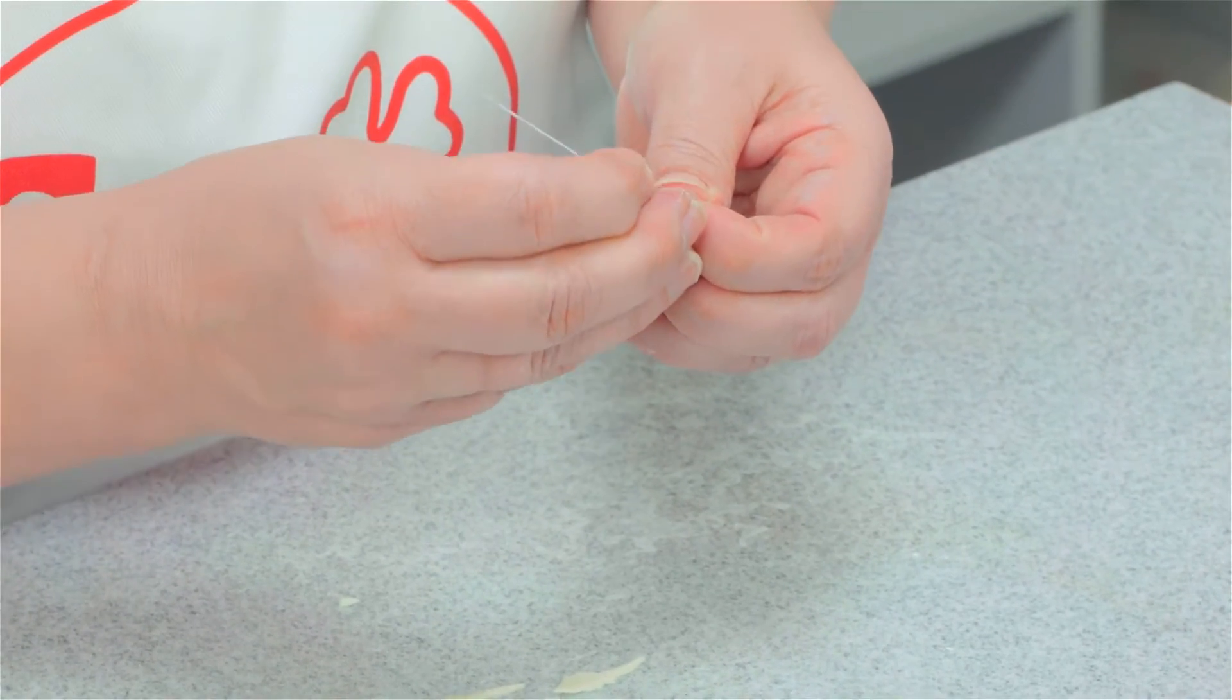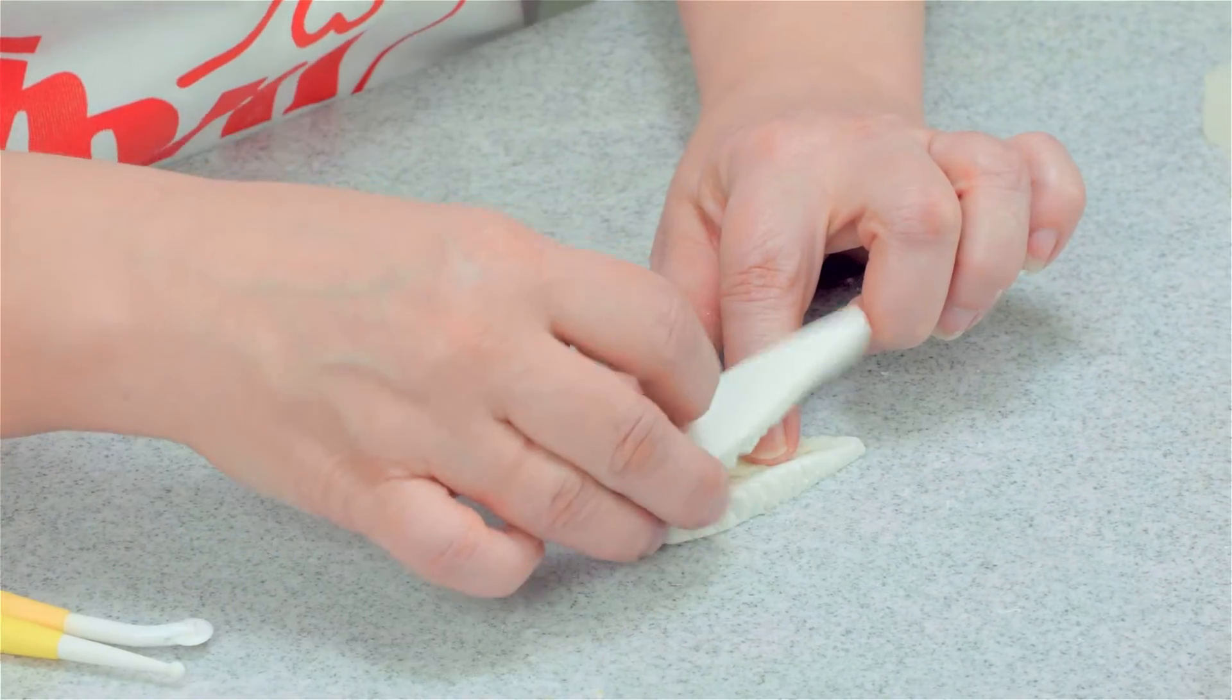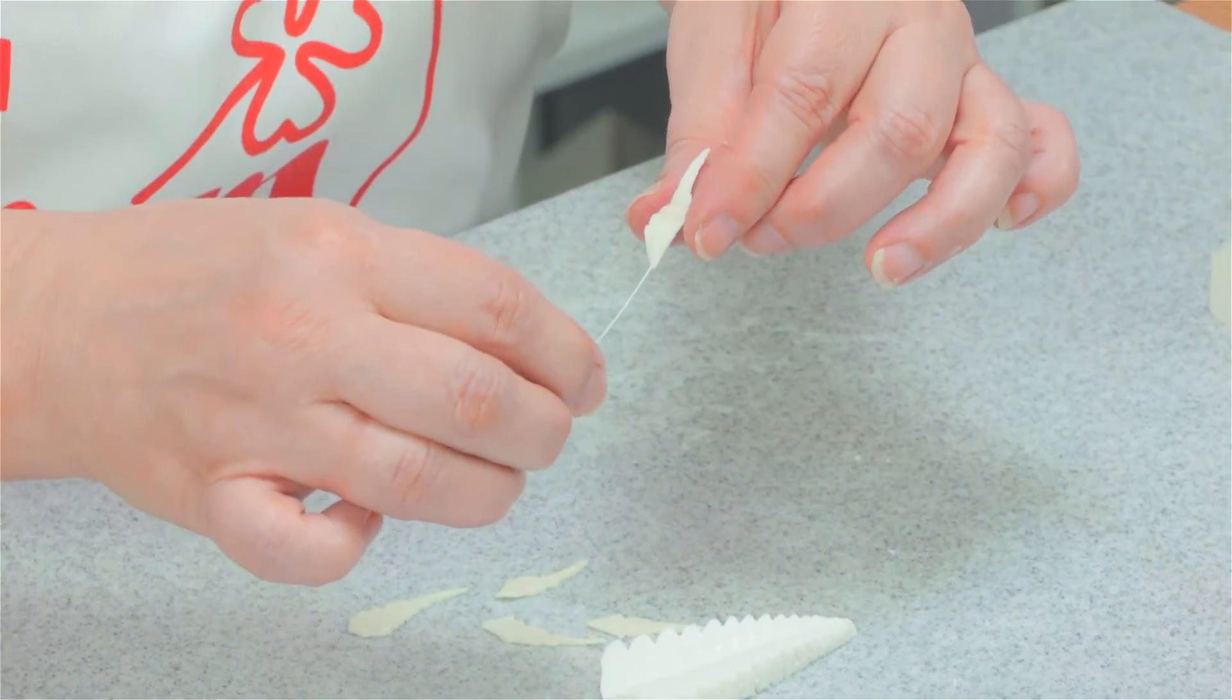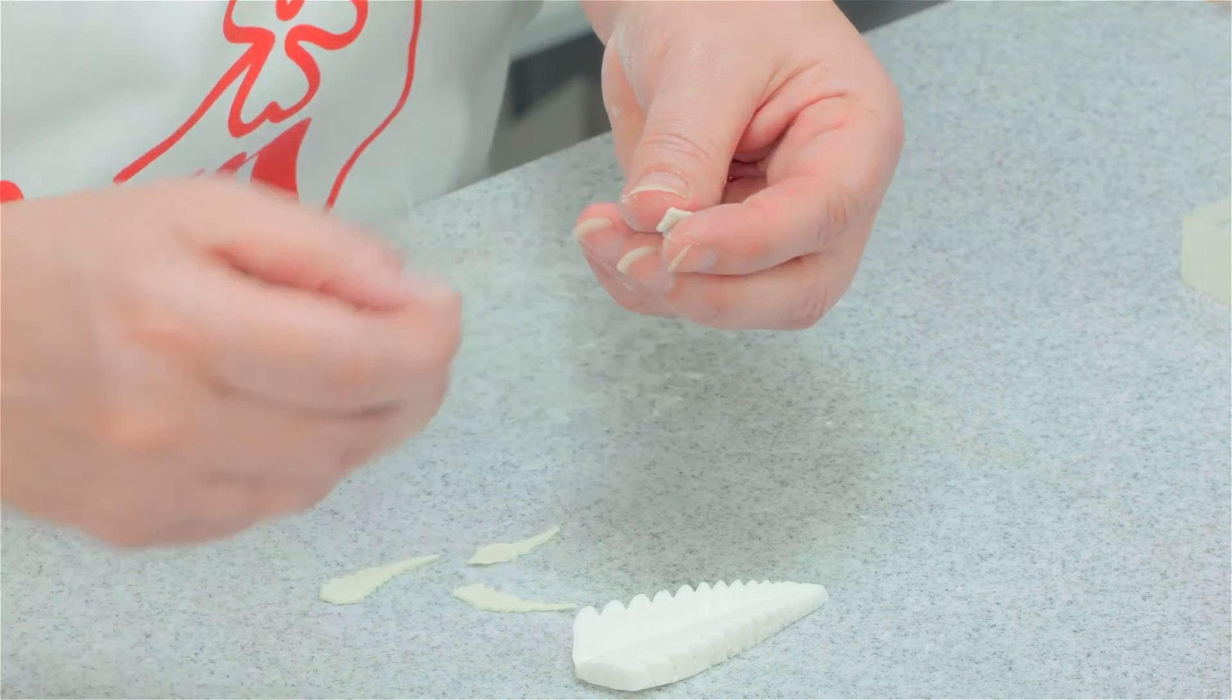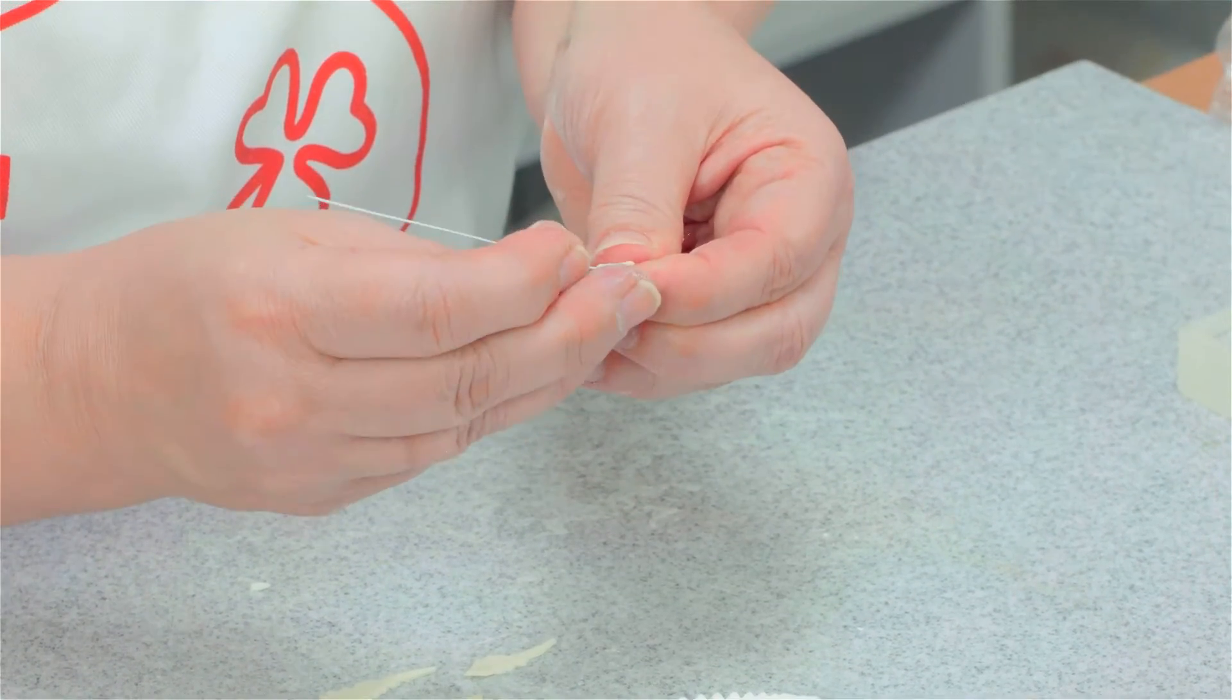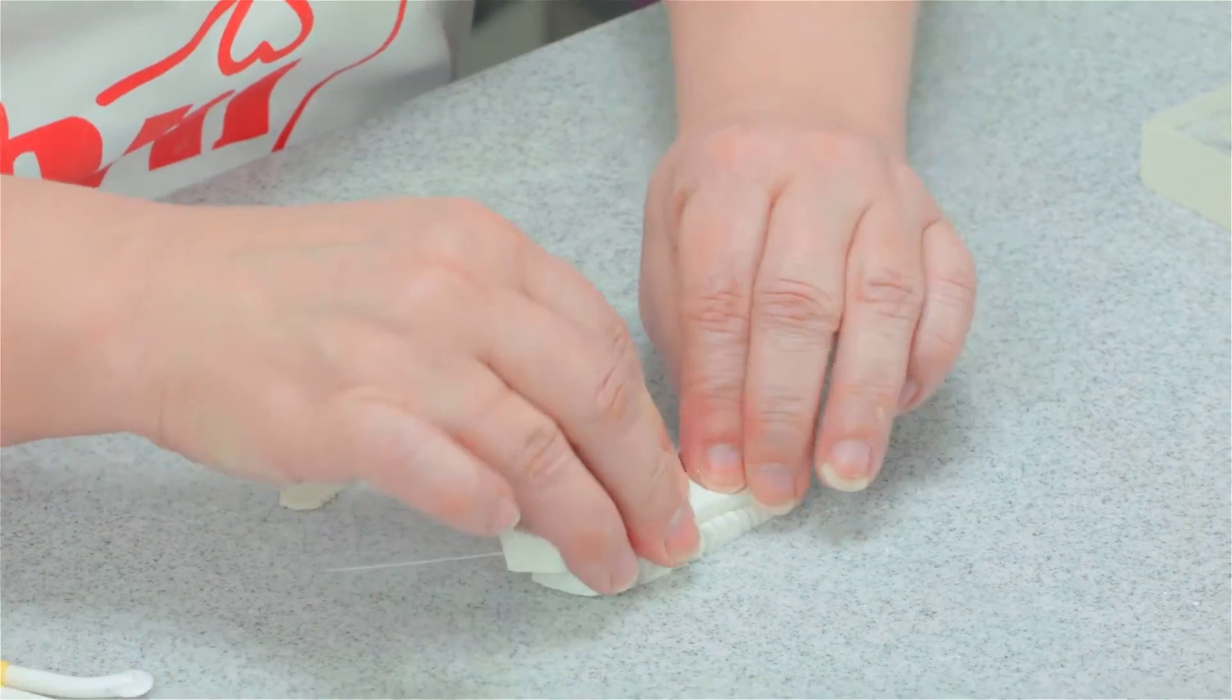If you want to you can actually thin out the edges of these with a balling tool, but I find actually just pressing it in the veiner seems to thin it a little bit and it makes it very time consuming if you ball each one as well with a balling tool. It's already quite time consuming by how many of the fronds that you have to make for each leaf.